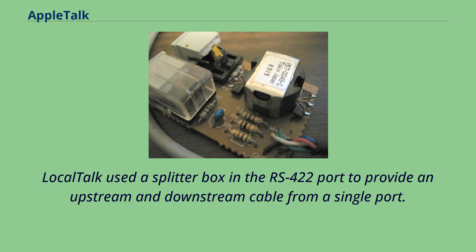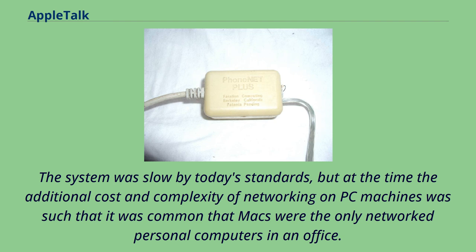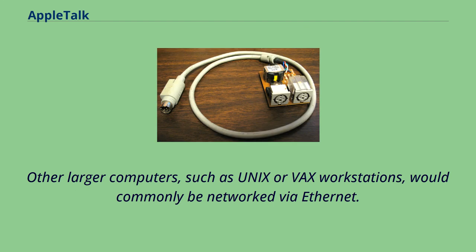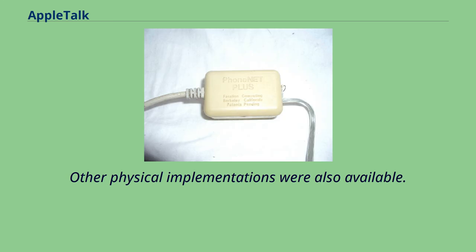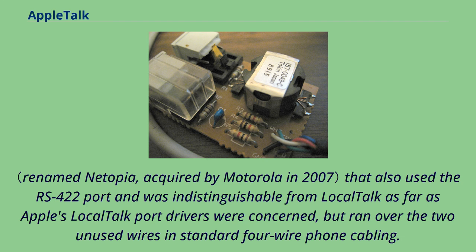The system was slow by today's standards, but at the time the additional cost and complexity of networking on PC machines was such that Macs were often the only networked personal computers in an office. Other larger computers, such as Unix or VAX workstations, would commonly be networked via Ethernet. A very popular replacement for LocalTalk was PhoneNet, a third-party solution from Farallon Computing that also used the RS-422 port and was indistinguishable from LocalTalk as far as Apple's LocalTalk port drivers were concerned, but ran over the two unused wires in standard four-wire phone cabling. Farallon provided solutions for PhoneNet to be used in both star and bus configurations.